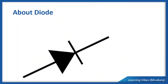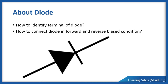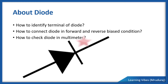Hey everyone, in this session we are going to learn three things: how to identify the terminals of a diode, how to connect the diode in forward and reverse bias condition, and how to check the diode with a multimeter. So without wasting time, let's begin with the first thing.